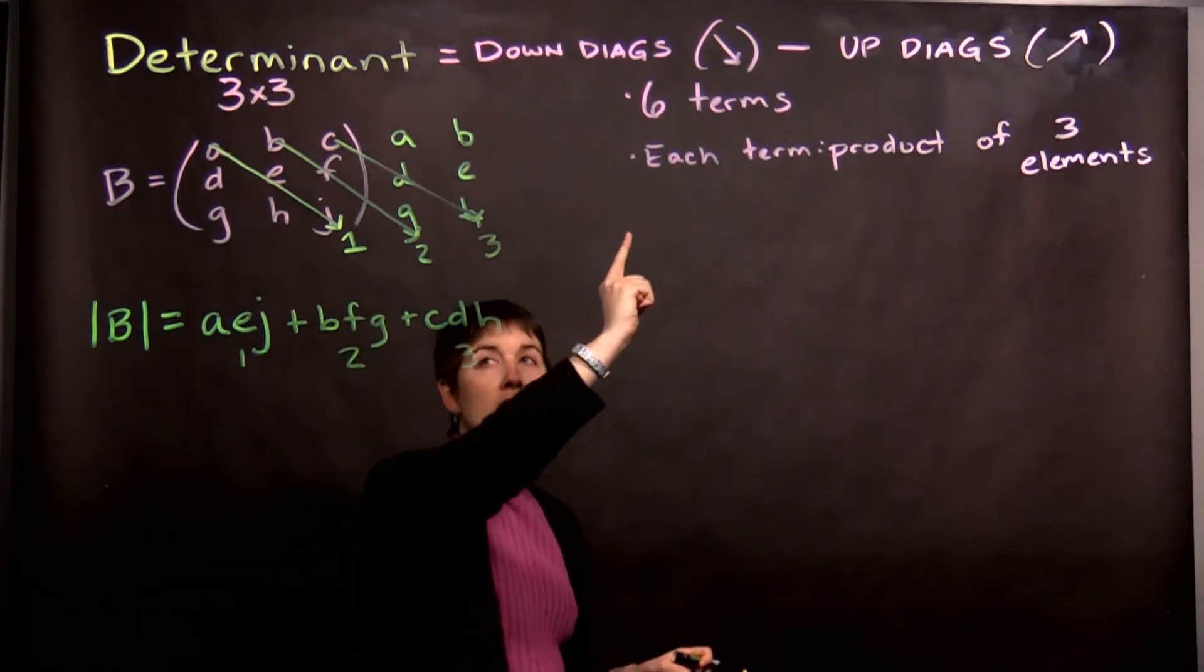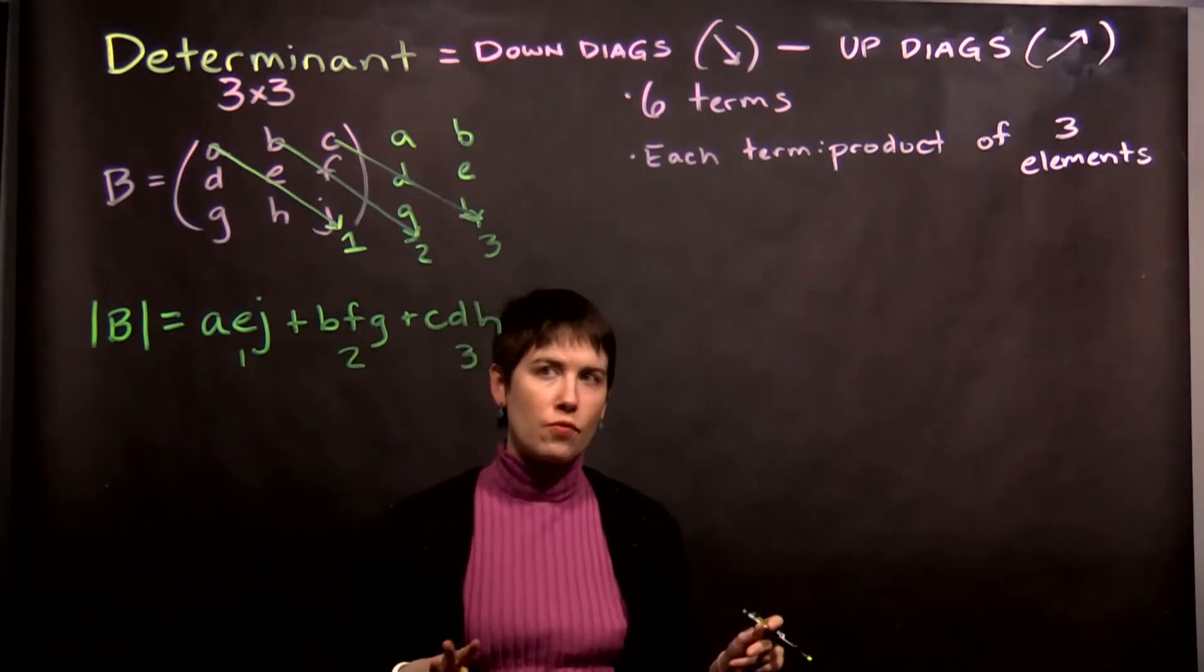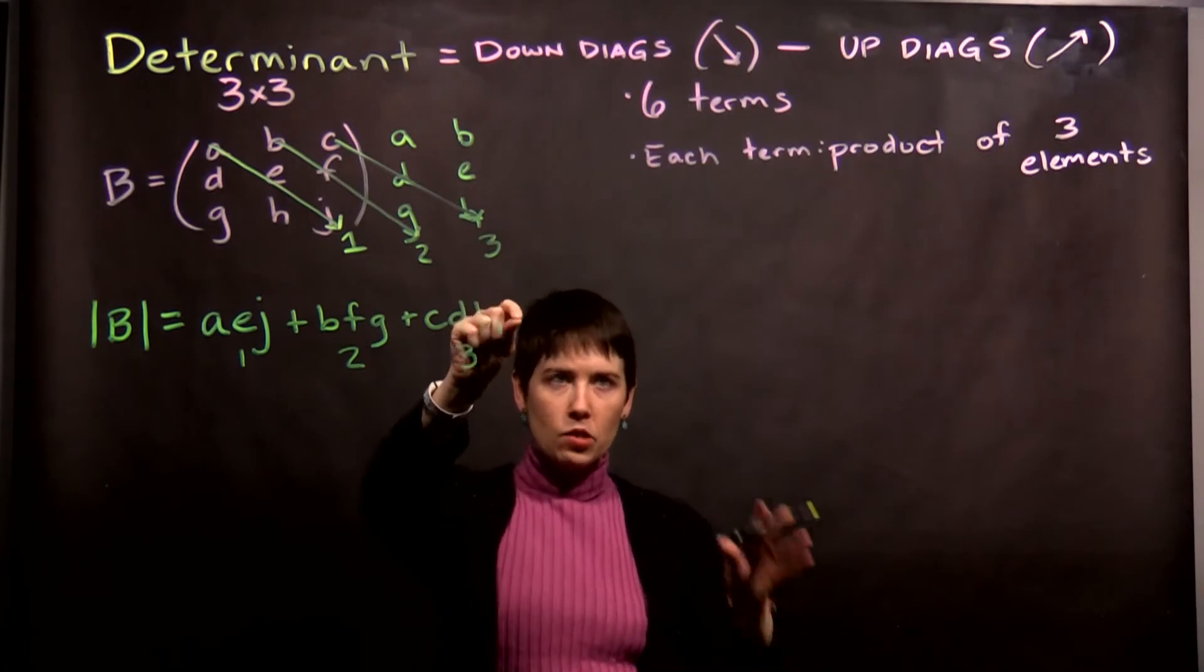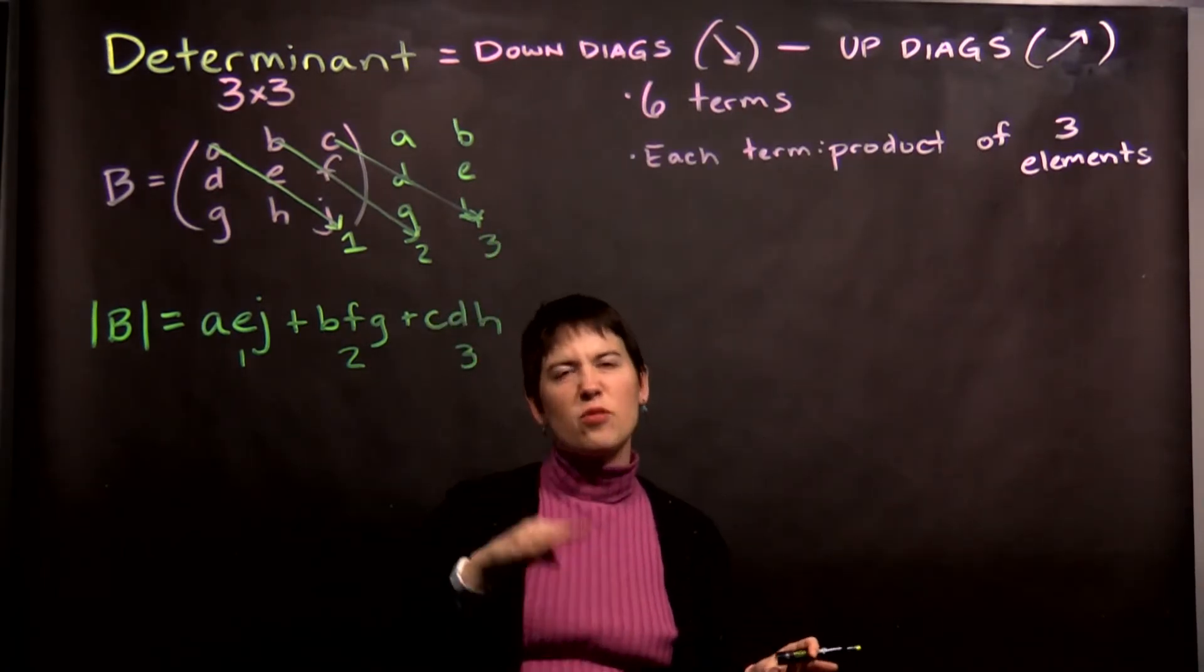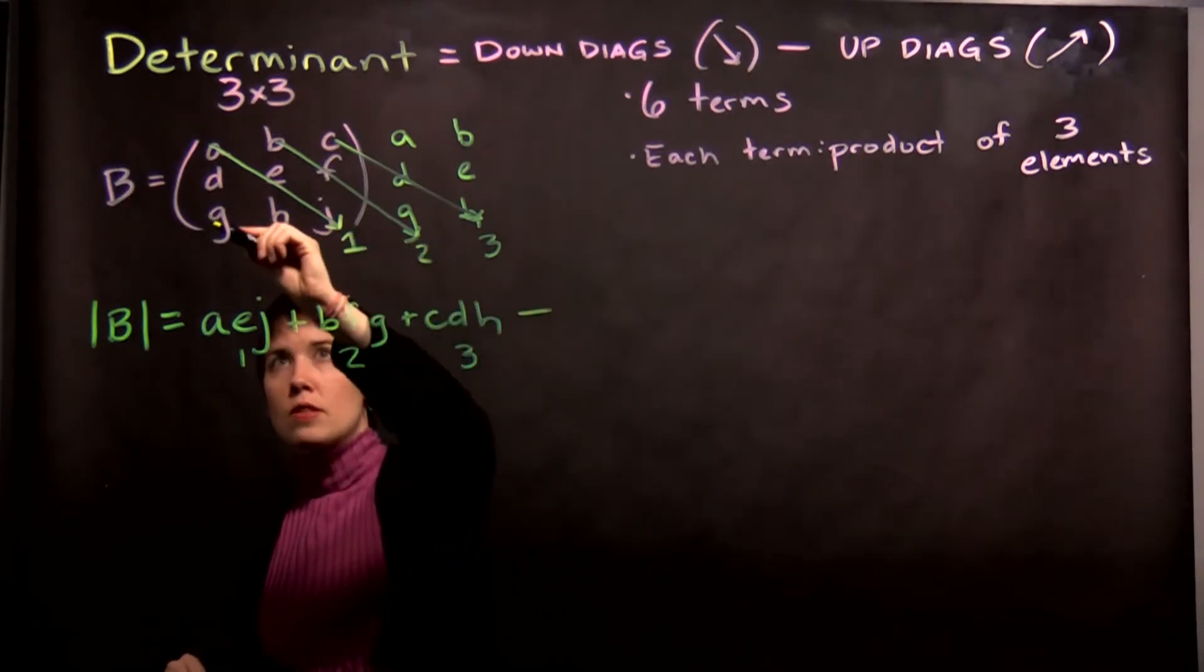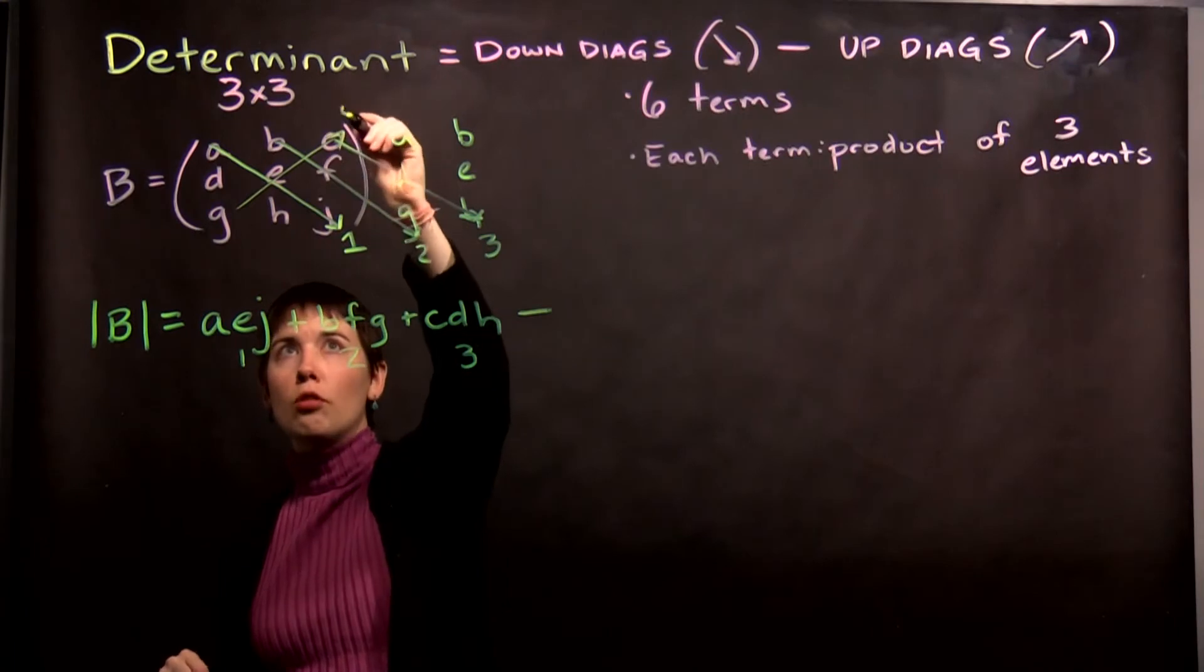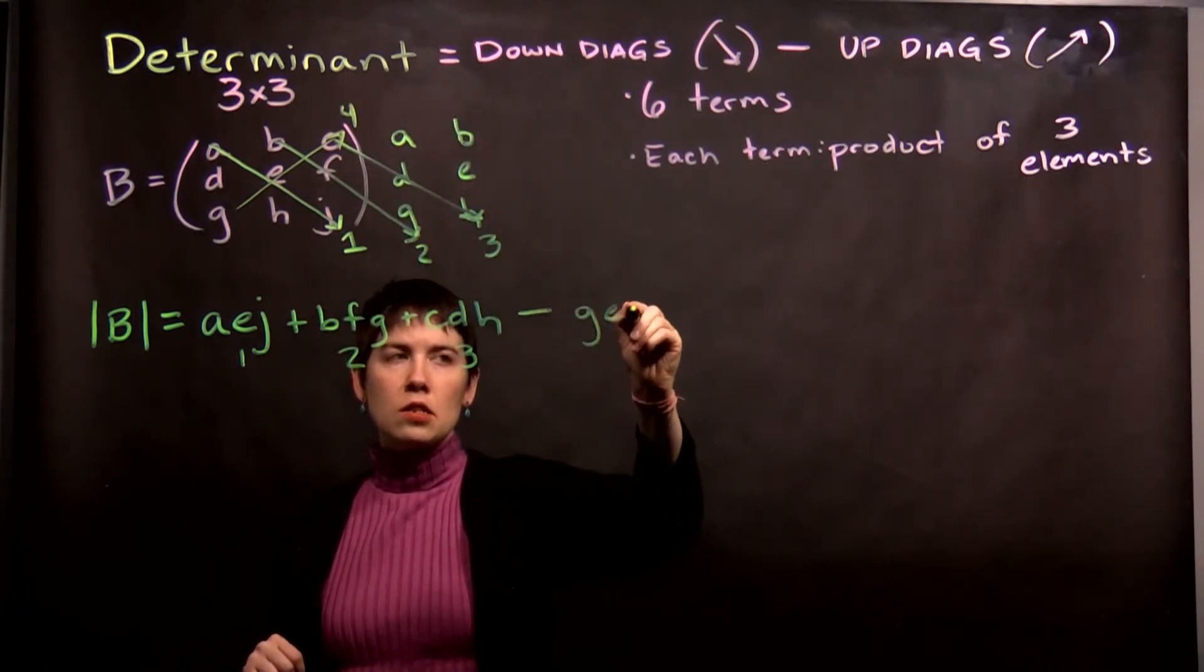Now, we have to do the up-diagonals. In this case, we're subtracting each of them. You can either say minus and then parentheses three terms. I'll use just a minus sign in front of each term. So, minus this up-diagonal here, which I'll call term 4, G, E, C.